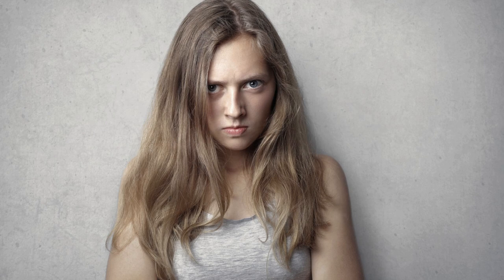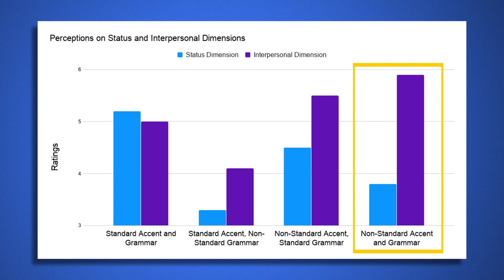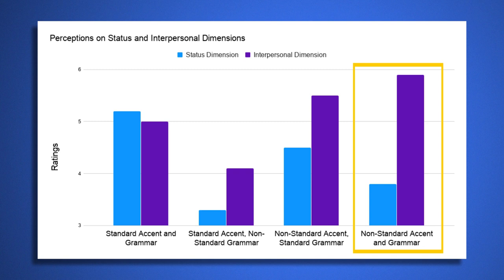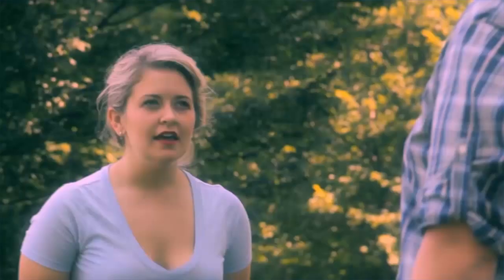Let's look at all these conditions together. Depending on your non-standard accent, if you use non-standard grammar, your accent seems to have a discounting effect — it's as if people expect you to use different grammar based on your accented speech. However, it seems you don't get that discounting effect if you sound like a standard speaker but use what some may consider bad grammar.